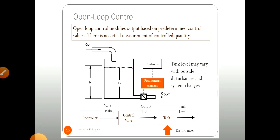Here one example is shown: Open Loop Control System. Open loop control modifies output based on predetermined control values. There is no actual measurement of the control quantity.